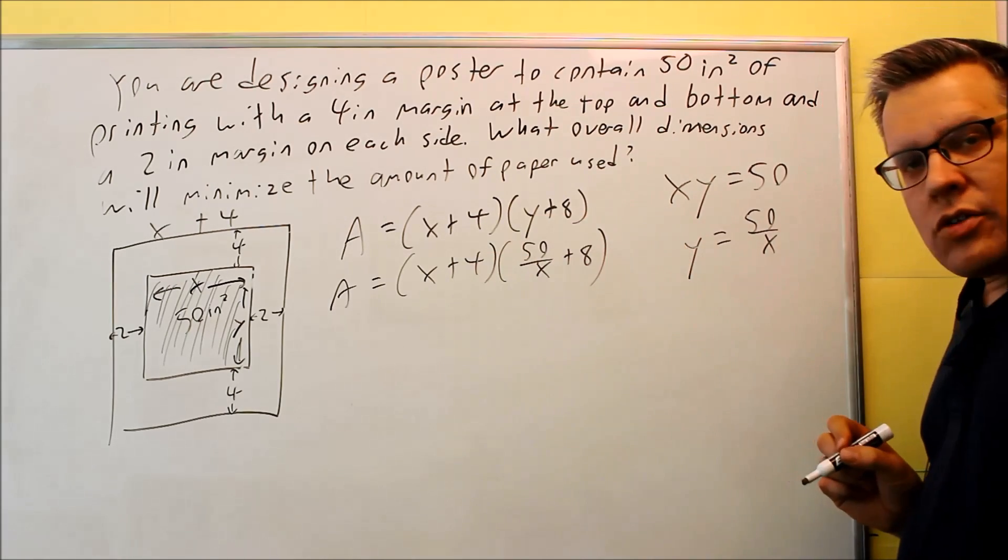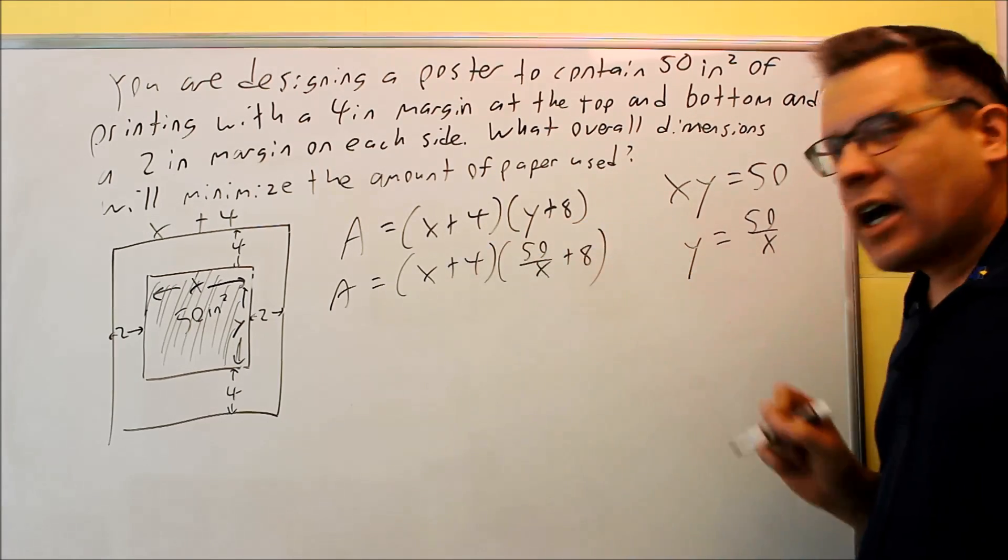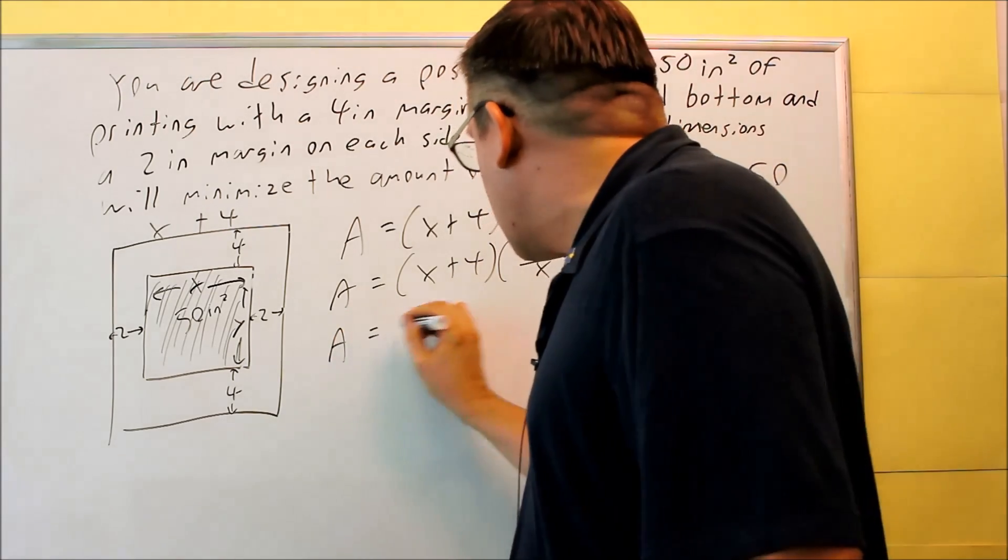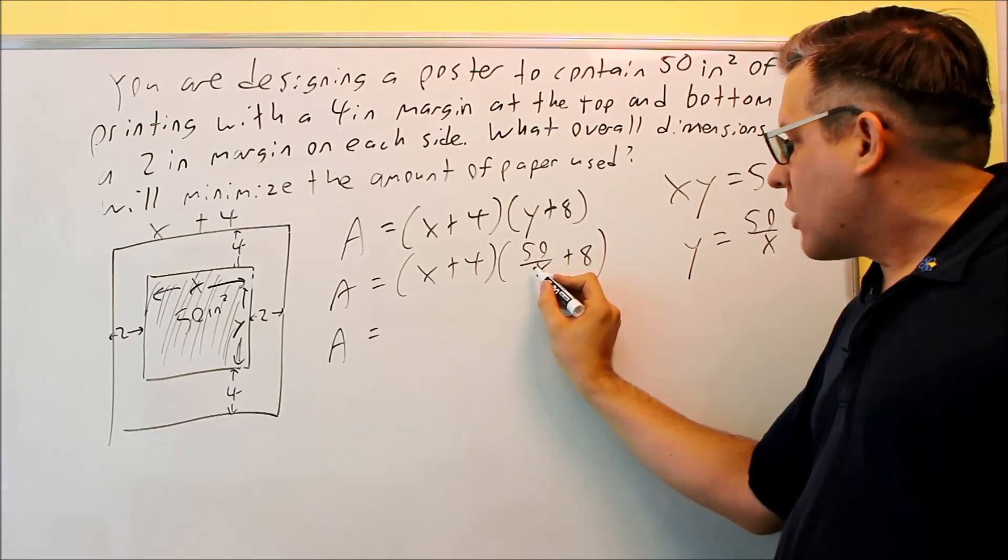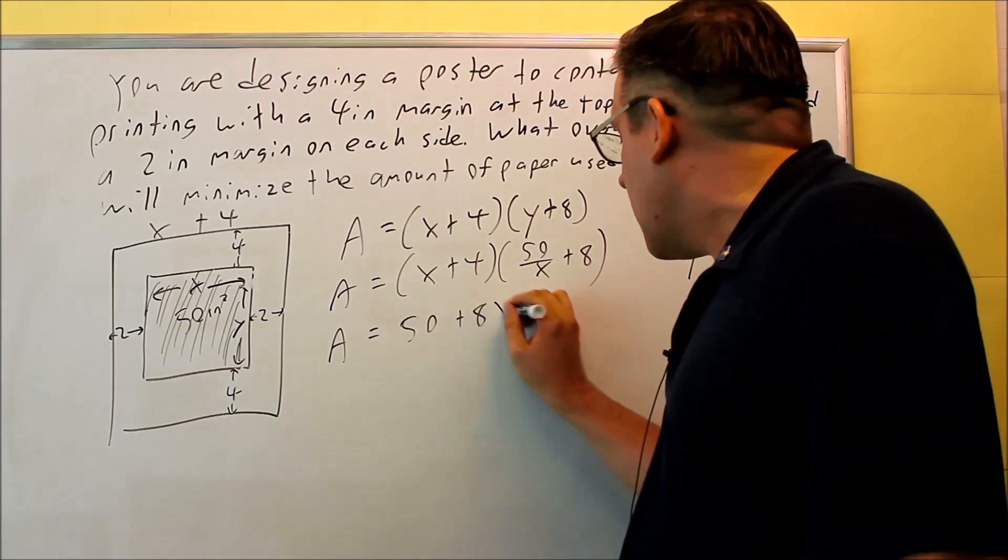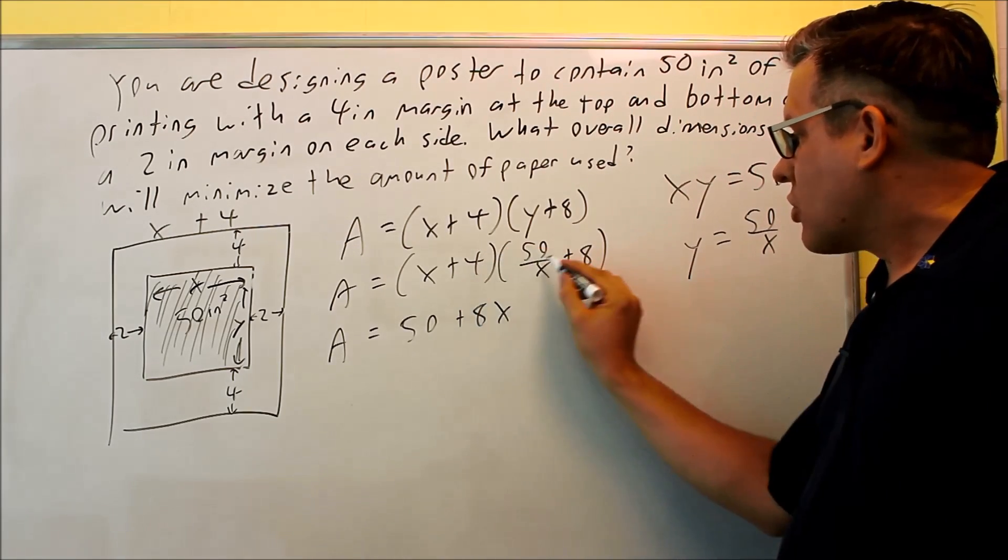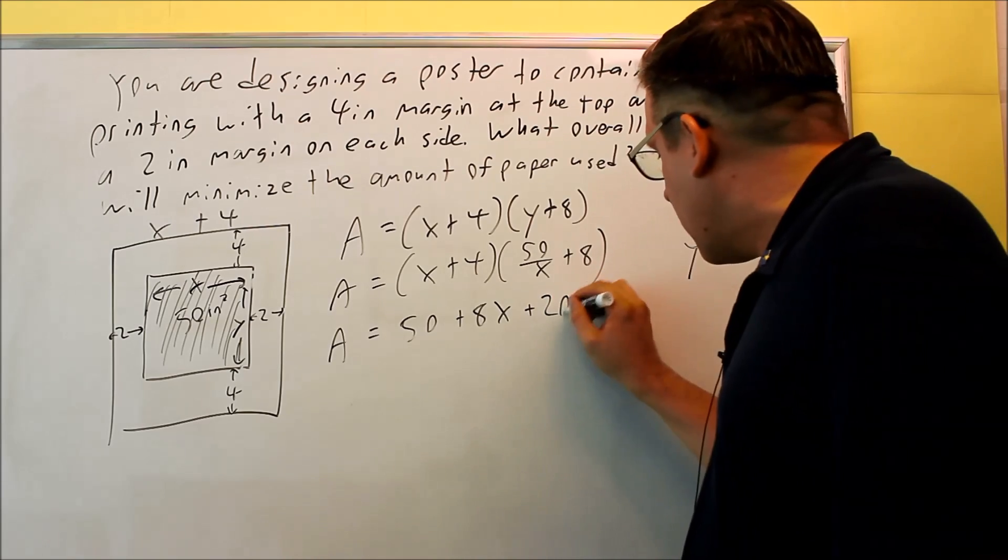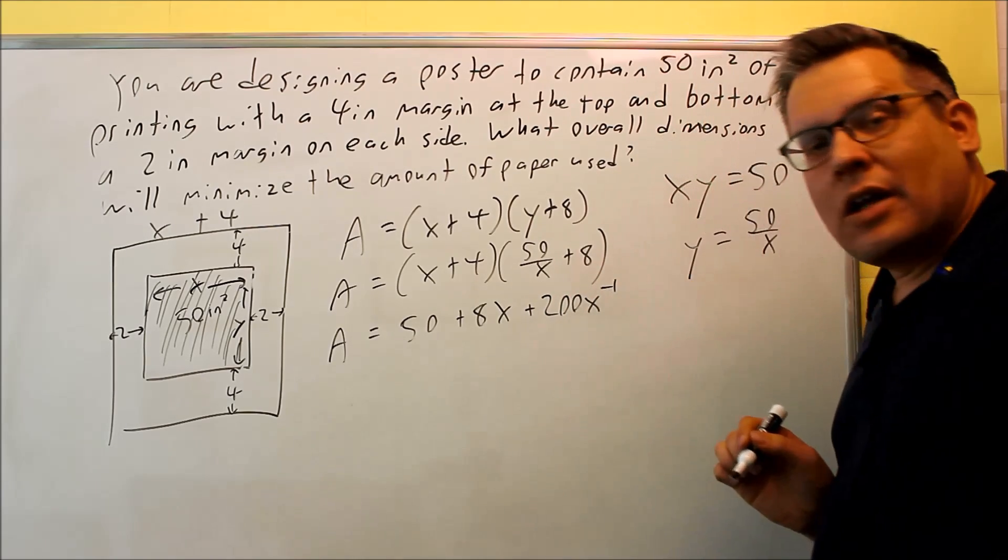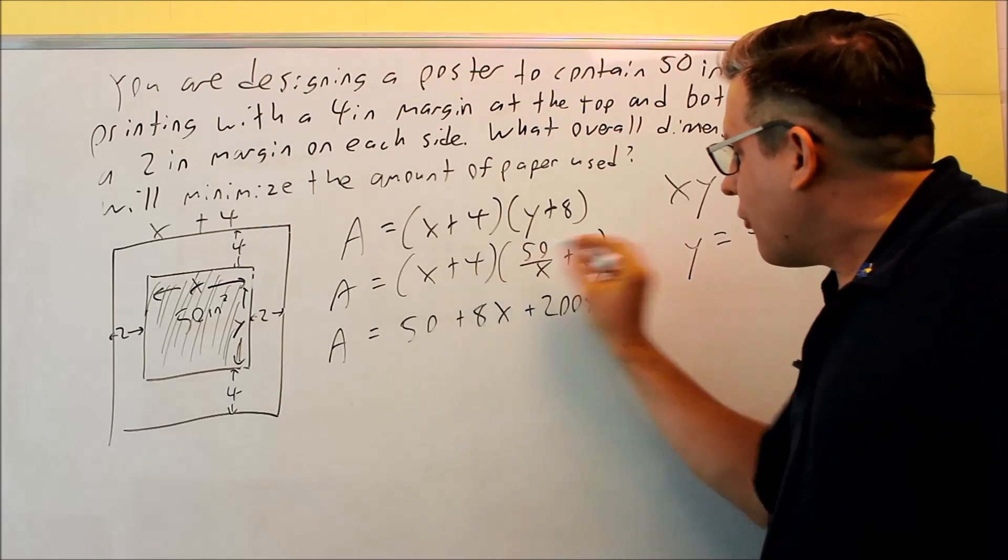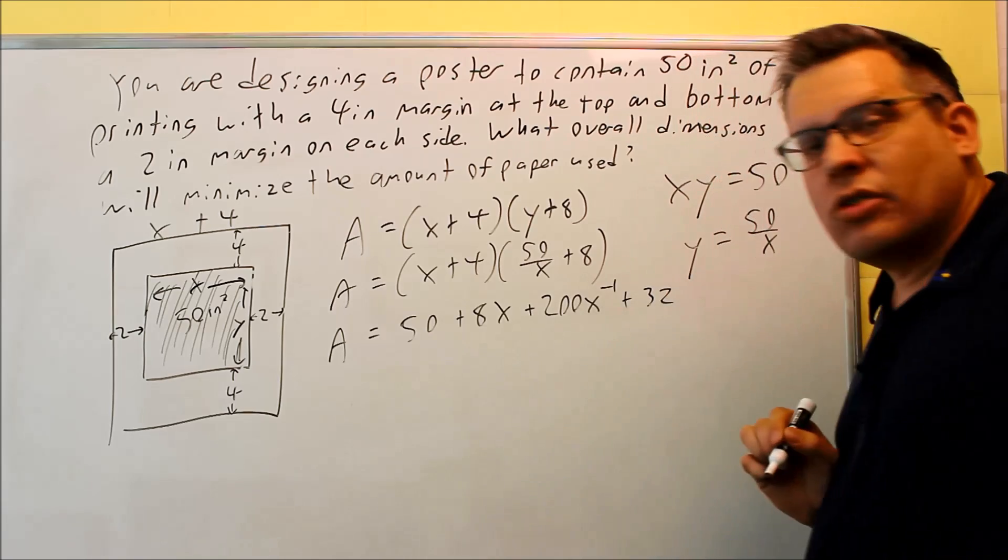You can leave it in this form if you want to, or if you'd like to multiply it out to avoid using the product rule, you can do that. So I'm going to multiply this out, actually. So when I do a FOIL on this one, x times 50 over x, I'm just going to get 50. x times 8 is 8x. If I multiply this one, I'm going to get 200 over x. But I'm going to write that as 200x to the negative 1 to make it into a power to make it easier when I do the derivative. And 4 times 8 is 32.